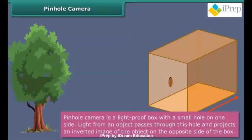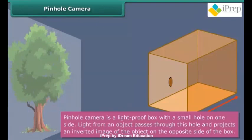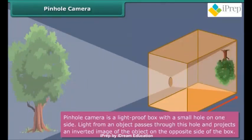A pinhole camera is a light-proof box with a small hole on one side. Light from an object passes through this hole and projects an inverted image of the object on the opposite side of the box. Let us learn how to make a pinhole camera.